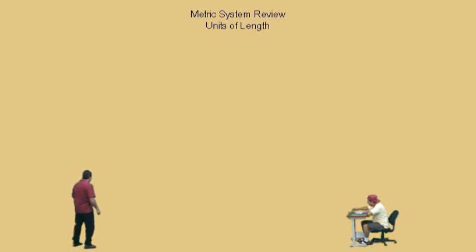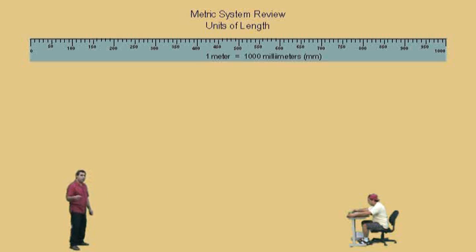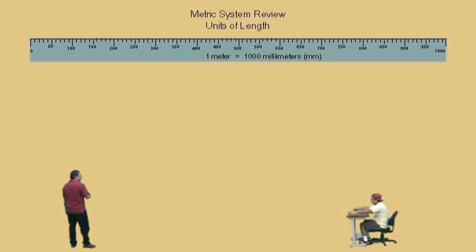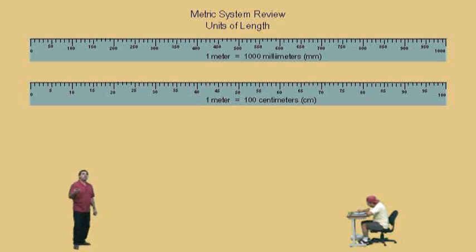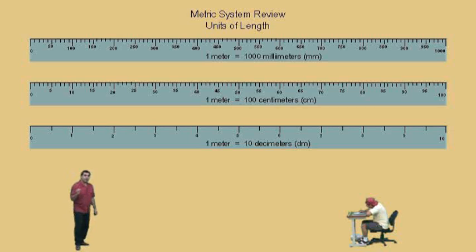Got your meter stick, Charlie? Okay, you're going to be helping us out with this. Here's a meter stick broken up into millimeters. Remember, milli means one-thousandths of, so there are a thousand millimeters in one meter. Here's a meter stick broken up into centimeters. Centi means a hundredth of, so there are a hundred centimeters in one meter. And a meter stick broken up into decimeters. Deci means a tenth of, and so there are ten decimeters in one meter.